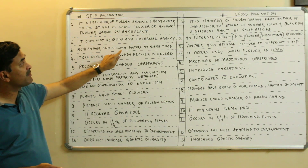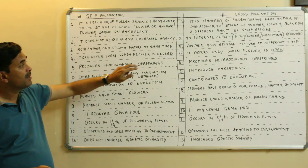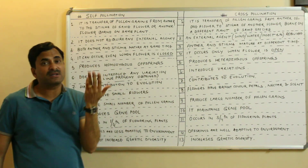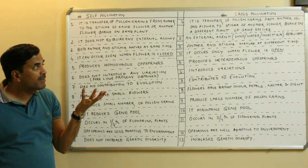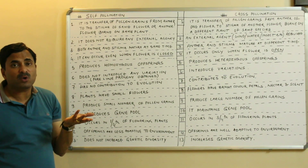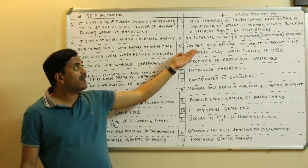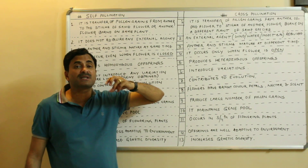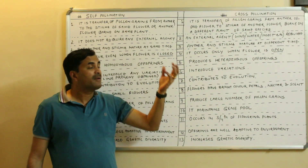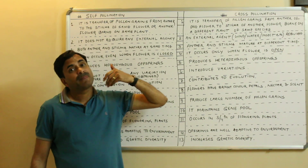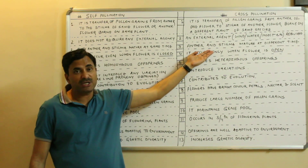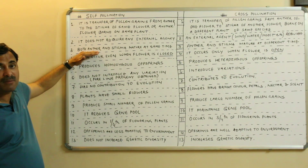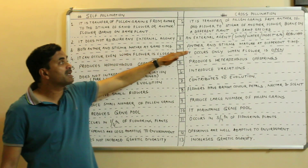In self-pollination the anther and stigma must mature at the same time, while in cross-pollination the anther and stigma mature at different times, and hence cross-pollination occurs. For example, if a bisexual flower's anther and stigma have different maturity periods, then instead of self-pollination, cross-pollination will take place.